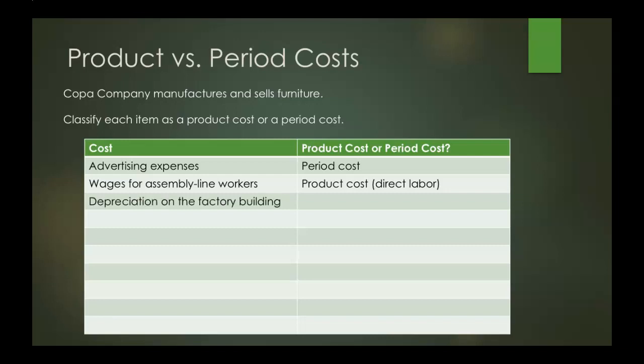Now, depreciation on the factory building. The key piece here is that it's on the factory itself. Since it's on the factory, that makes it a product cost, and we put that under manufacturing overhead.